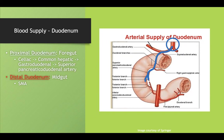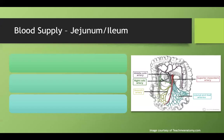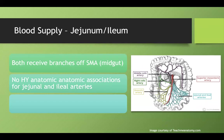Clinically, the superior and inferior pancreaticoduodenal arteries have an anastomosis, providing collateral circulation and a decreased risk of ischemia. If there's a blockage in one region, blood can often be supplied from the other. Blood supply to the jejunum and ileum is straightforward — all branches come off the SMA, with no notable anastomoses or watershed areas to memorize.